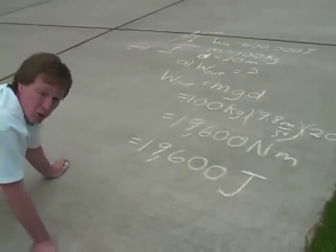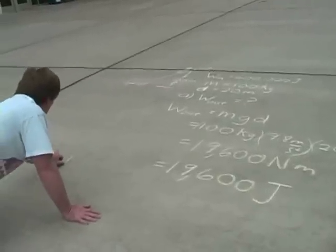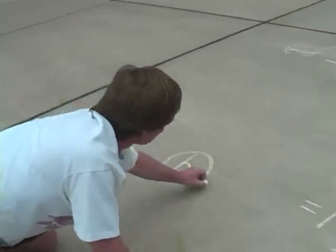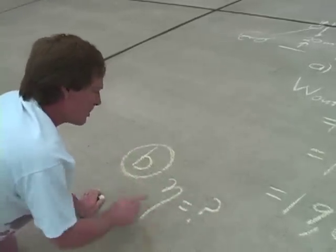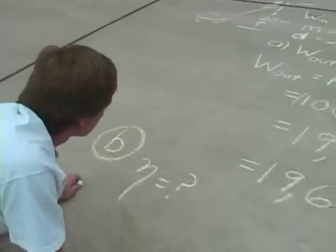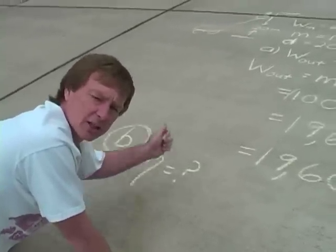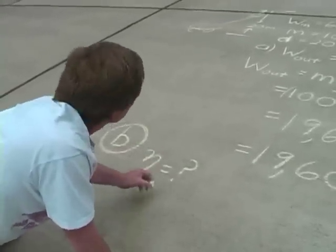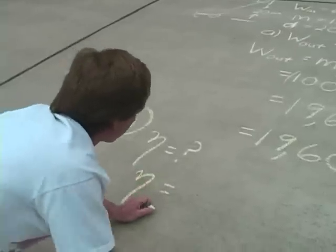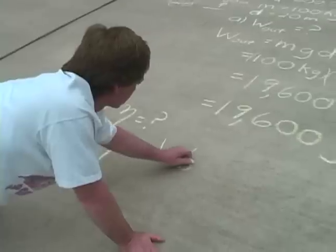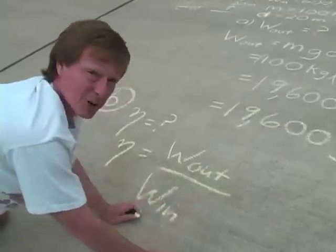So the next question is, what's the efficiency? Not very good. Let's try it out. What's the efficiency? It's called eta. So if you're typing in a font, you press an H and click at the symbol font, you'll get this. So the efficiency is equal to the output work divided by the input work times 100%.